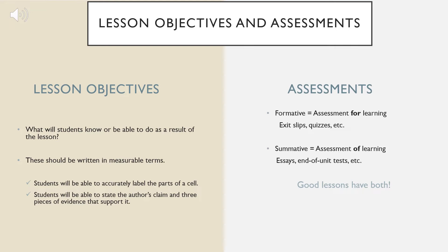For assessments, think about and record the formative and summative assessments that will be used to measure learning at the end and during the lesson. Good lessons have a combination of both formative and summative assessments. Your success criteria for your assessments must be measurable and should directly align with your lesson objectives.